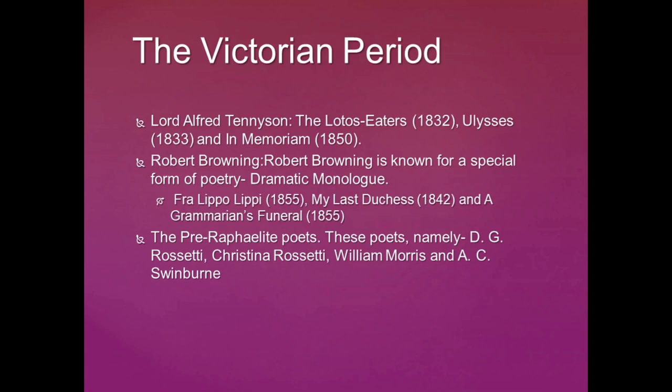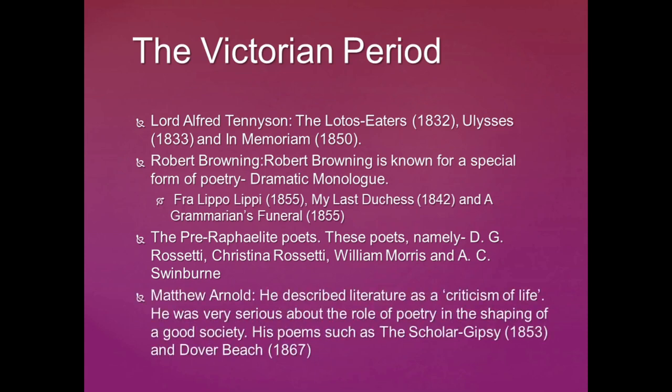Along with Tennyson and Browning, the Victorian period saw a new movement called the Pre-Raphaelite poets. These poets — namely Dante Rossetti, Christina Rossetti, William Morris, and A.C. Swinburne — belong to the Pre-Raphaelite school, also known as the Art for Art's Sake school of poetry. Matthew Arnold is also a representative Victorian poet, who described literature as a criticism of life. He was very serious about the role of poetry in shaping a good society. His poems The Scholar Gypsy and Dover Beach are his masterpieces.